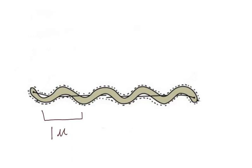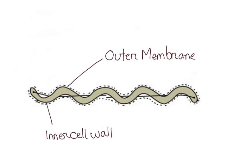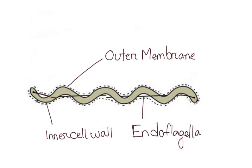They have a double membrane — one outside the thin peptidoglycan layer and another inside the cell wall. The periplasmic space contains special filament-like flagella called the endoflagella. Together they are called the axial filament.